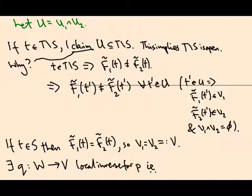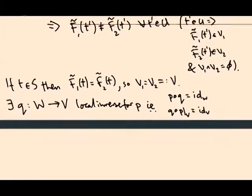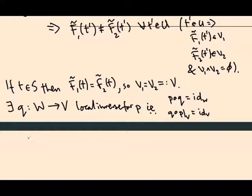In other words, a map that goes from the base back up to the sheet such that P composed with Q is the identity on W, so if I go up and then down I get back where I started, and Q composed P, at least restricted to this set V, is the identity on V. So if I start in this sheet V here, and I project down and then I go back up using this local inverse Q, I end up where I started.